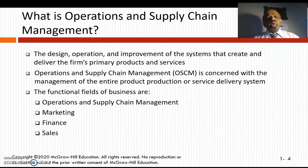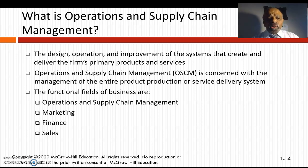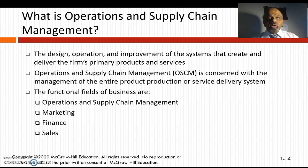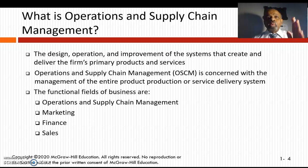Operations and supply chain management is the design, operation, and improvement of the systems that create and deliver a firm's primary products and services. For a car manufacturer, that means how good your design is, how good your operations are, what processes you have, and how you improve those systems to ensure the car is manufactured and delivered to the customer with the value you intend to create.